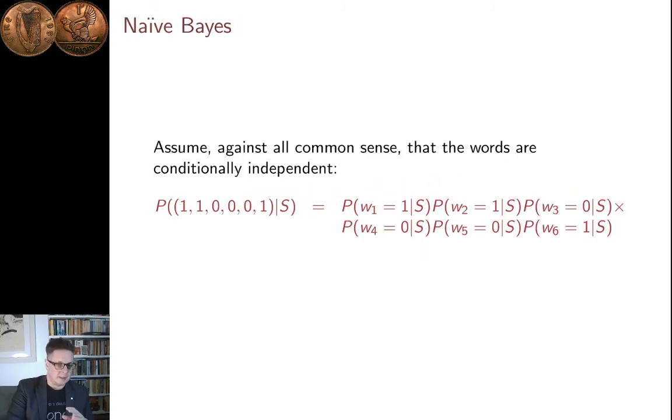And so, because we've made this conditional independence assumption, we're not having to count just the emails that contain word one and contain word two and don't contain word three and don't contain word four and don't contain word five and contain word six. Because that is quite a small number. And obviously, the smaller your number, the noisier your estimate is going to be. Instead, we're looking at the much larger number of emails that contain word one, the large number of emails that contain and the large number of spam emails that contain word two. And so, by the assumption, this is the naive part, by the naive assumption of conditional independence among the different attributes that might be indicative of spamness, we have reduced the data problems.